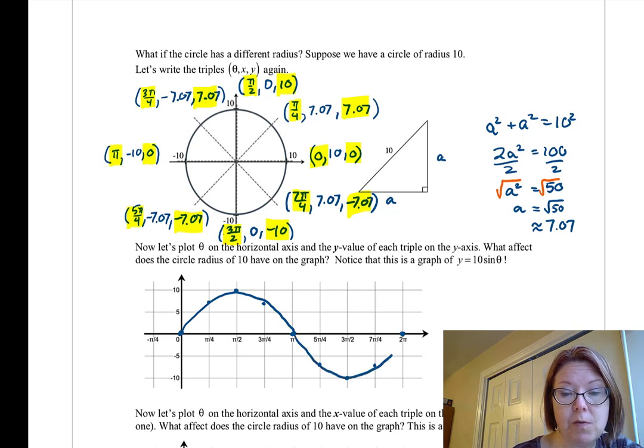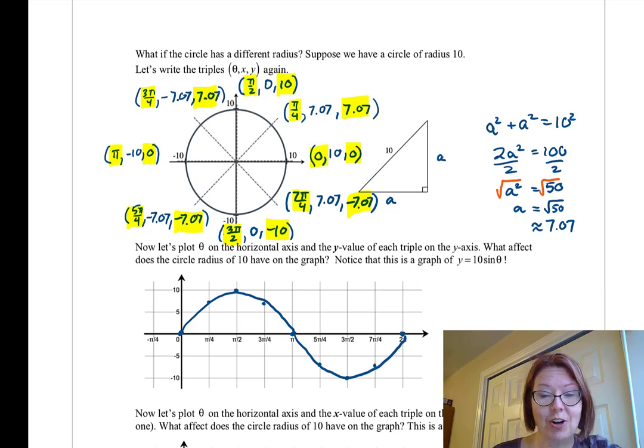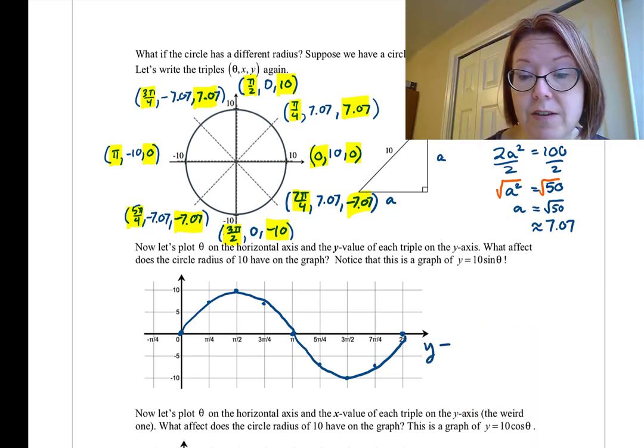And the only difference between this curve and the one we found when we used a circle of radius 1 is that this curve fluctuates between positive 10 and negative 10 instead of positive 1 and negative 1. In fact, this is exactly 10 times vertically the curve of sine theta. So this is a graph of y equals 10 sine theta.